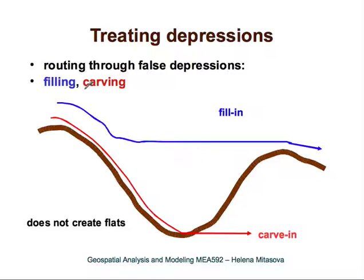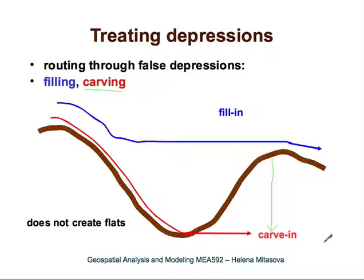Sometimes an alternative approach — carving — is preferable. It curves through the depression by lowering elevation in the relevant part to the level of the depression so that water can flow out. This also works well for shallow depressions, but if the depression is very deep, this change can be huge and can affect the accuracy of the digital elevation model over quite large distances.